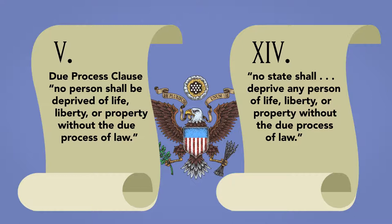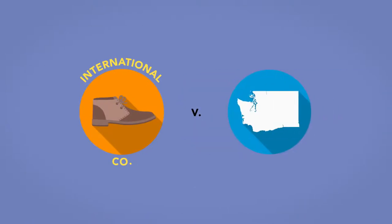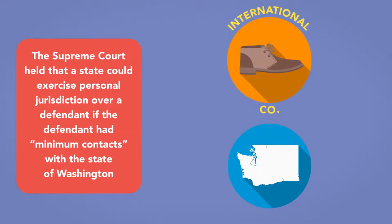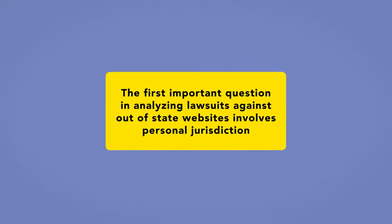A seminal personal jurisdiction case was International Shoe v. Washington, in which the Supreme Court held that a state could exercise personal jurisdiction over a defendant if the defendant had minimum contacts with the state of Washington and when it was fair for the non-resident defendant to have to defend the lawsuit there. Thus, the first important question in analyzing lawsuits against out-of-state websites involves personal jurisdiction.